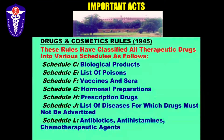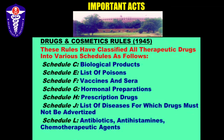Here we will look at the Drugs and Cosmetics Rules briefly, though importance is with pharmacology more than toxicology — but there is always a little bit of overlap between the two. These rules have classified all therapeutic drugs into various schedules as follows, as you see on the slide: Schedule C is a list of biological products; F is a list of poisons; G is hormonal preparations; H comprises prescription drugs; J is a list of diseases for which drugs must not be advertised — unethical; and Schedule L covers antibiotics, antihistamines, and chemotherapeutic agents.